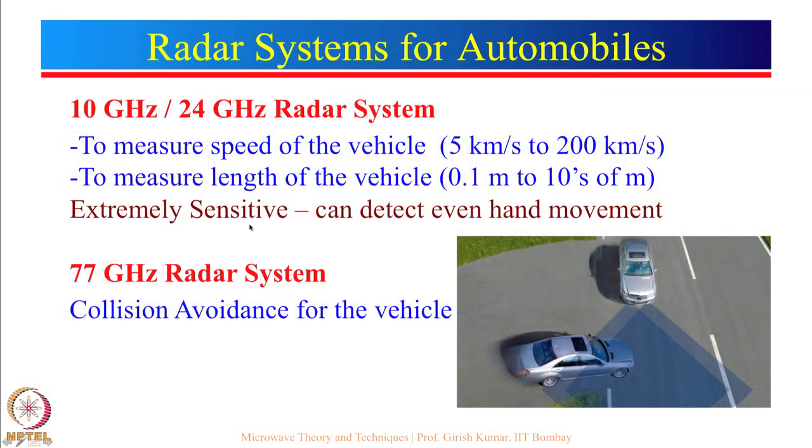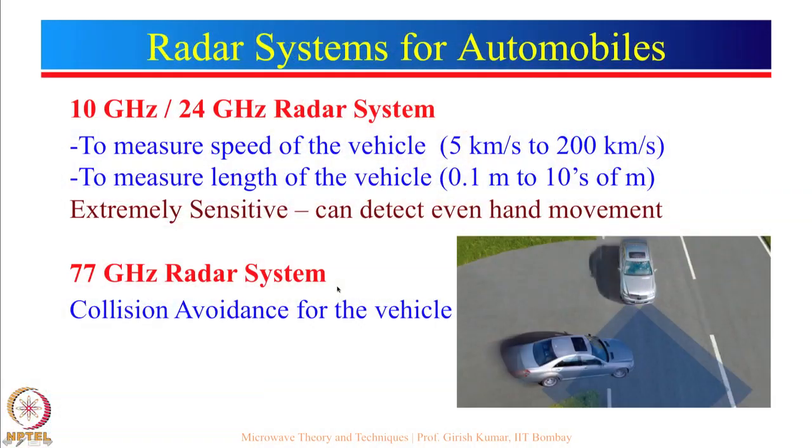Many high-end automobiles and driverless vehicles now use 77 GHz radar systems for collision avoidance. These modules are now available in compact form — approximately 10 cm × 10 cm — and can be mounted in the vehicle. High-end vehicles like high-end Mercedes do have these kinds of high-power radars.